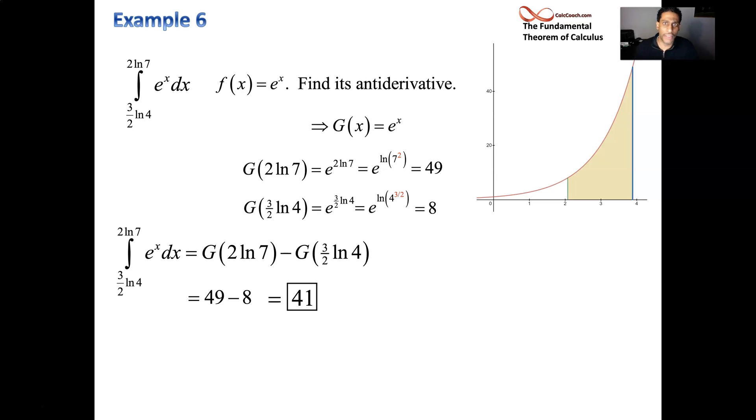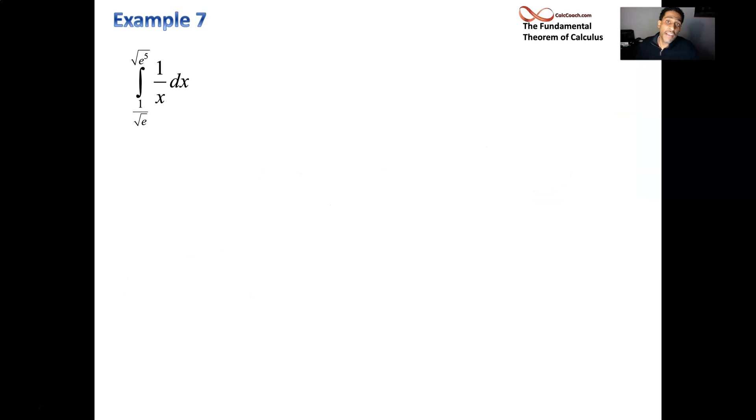Let's move on to example number 7. Trying to find the area under 1 over x from those strange bounds: 1 over root e up to e to the 5 halves. How do we find that? Well, we've got to start off with, there's the graph.